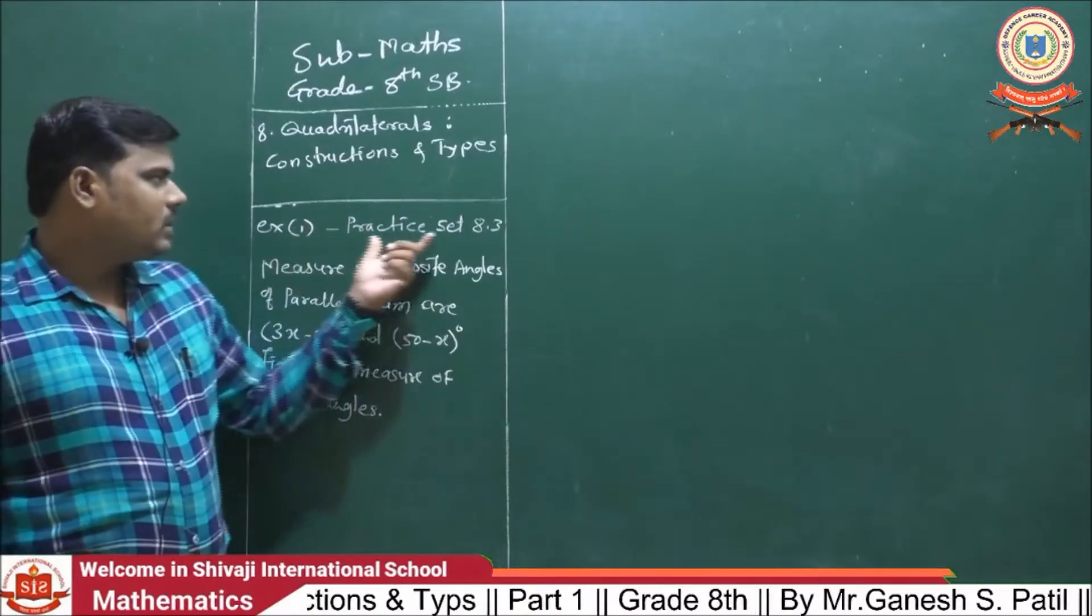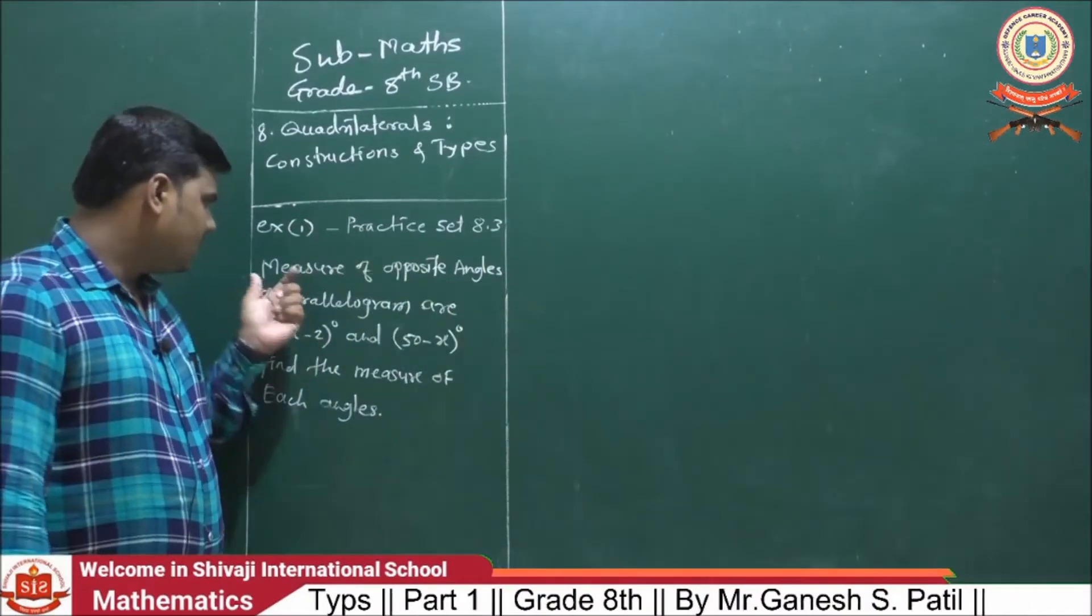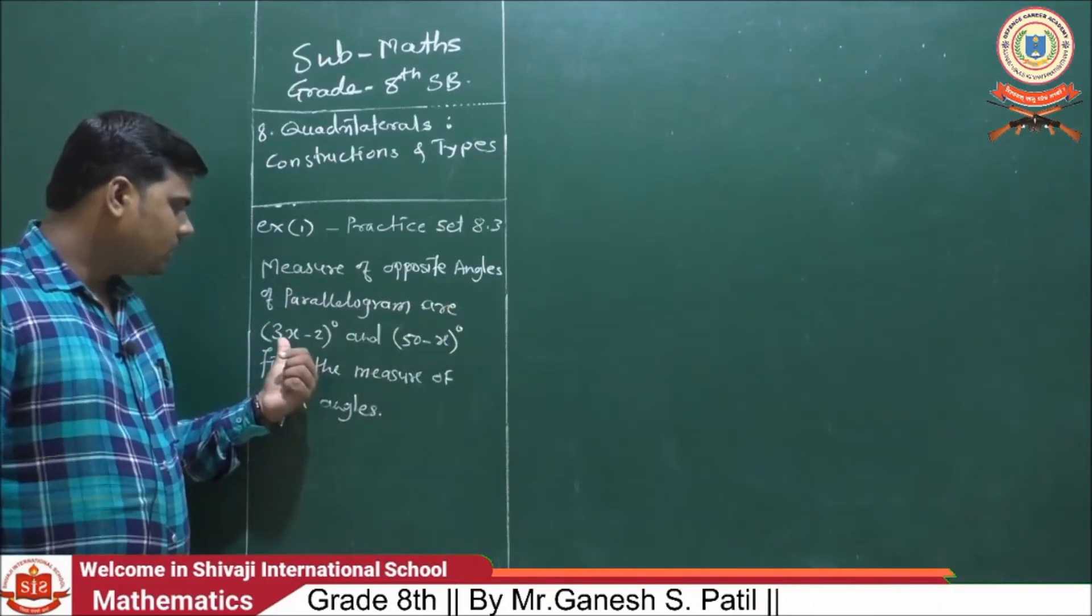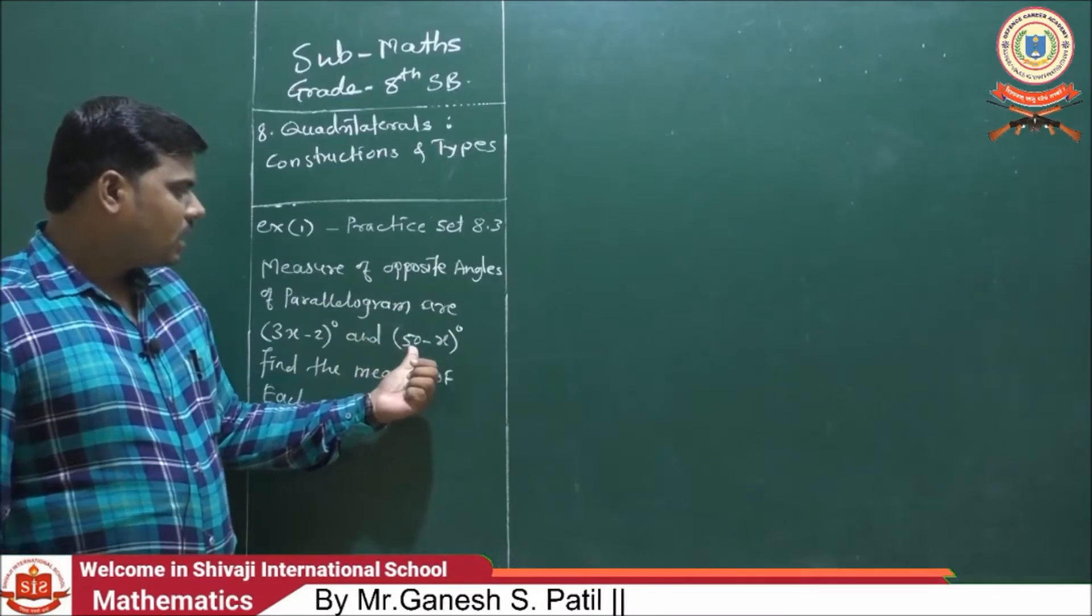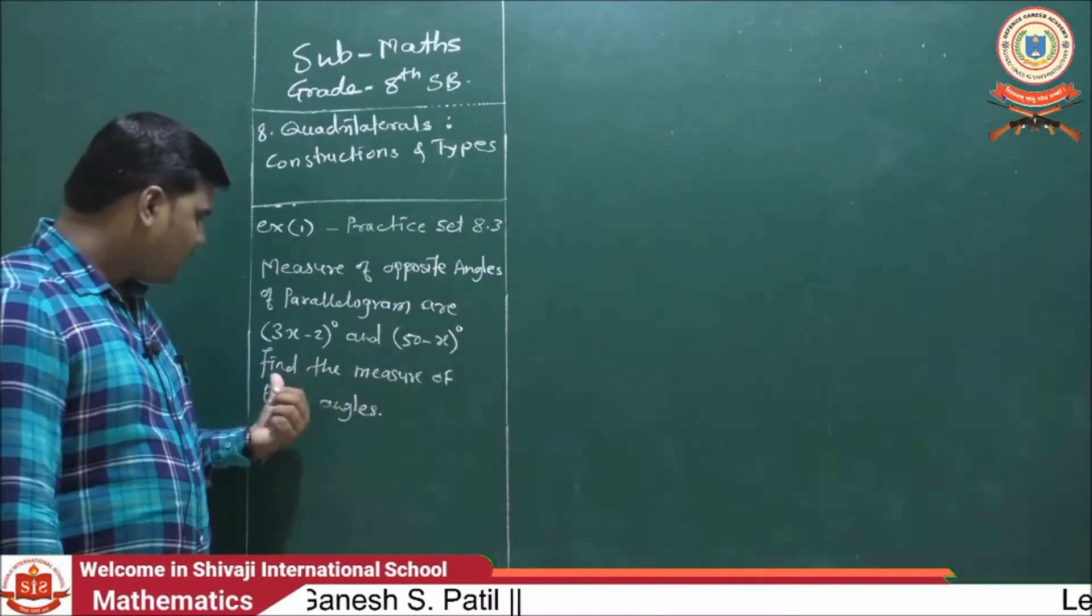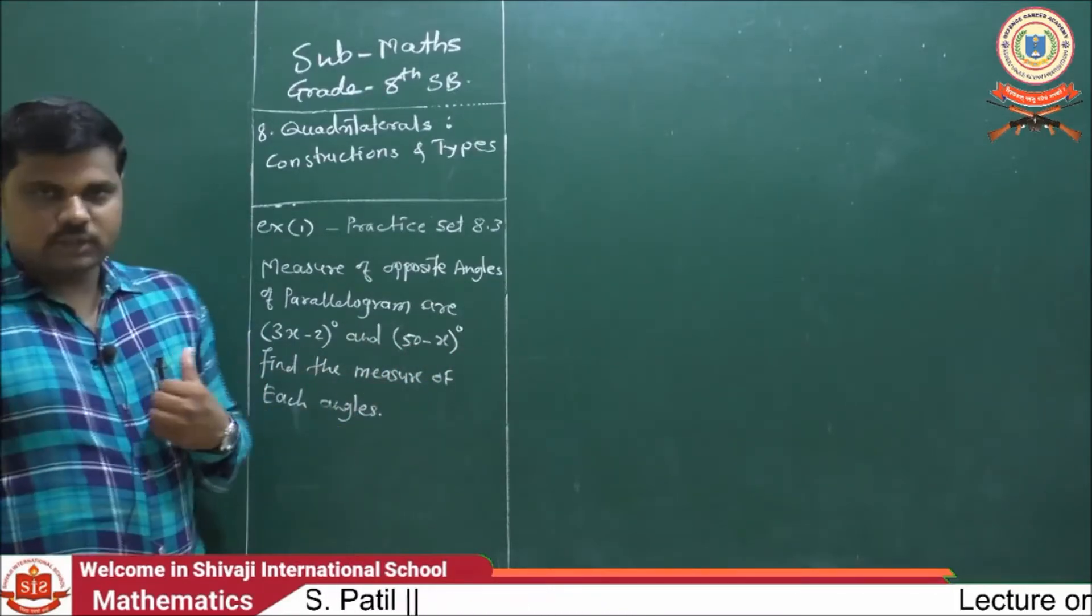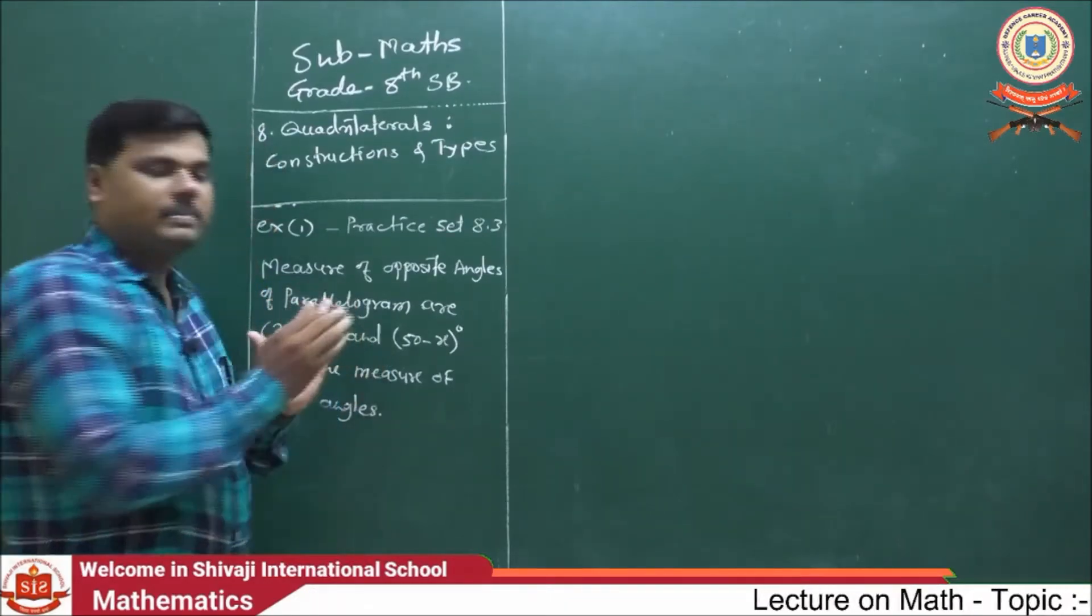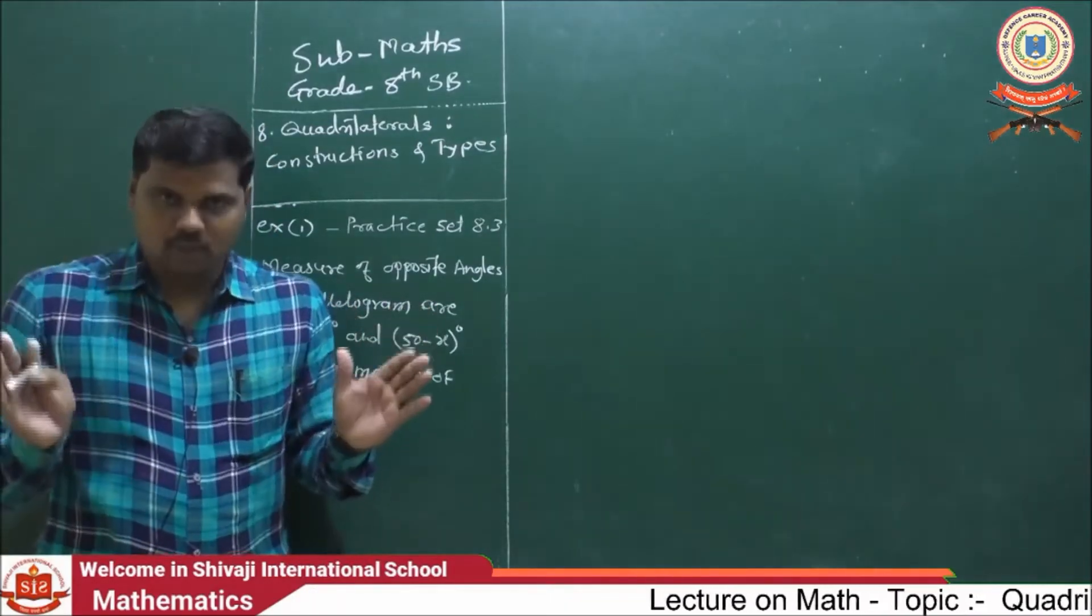Example number 1 in practice set 8.3. The measures of opposite angles of a parallelogram are 3x minus 2 degrees and 50 minus x degrees. Find the measure of each angle. See, this example is very important.